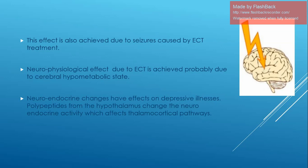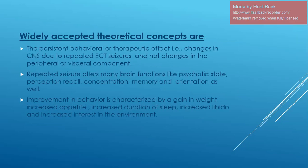The neurophysiological effect of ECT is achieved due to a cerebral hypermetabolic state. Neuroendocrine changes have an effect on depressive illness — polypeptides from the hypothalamus change neuroendocrine activity, which affects the thalamocortical pathways. The widely accepted theoretical concept is that the persistent therapeutic effect is due to changes in the CNS from repeated ECT seizures, not changes in the peripheral or visceral components. Repeated seizures also alter many functions like psychotic state, perception, recall, concentration, memory, and orientation.